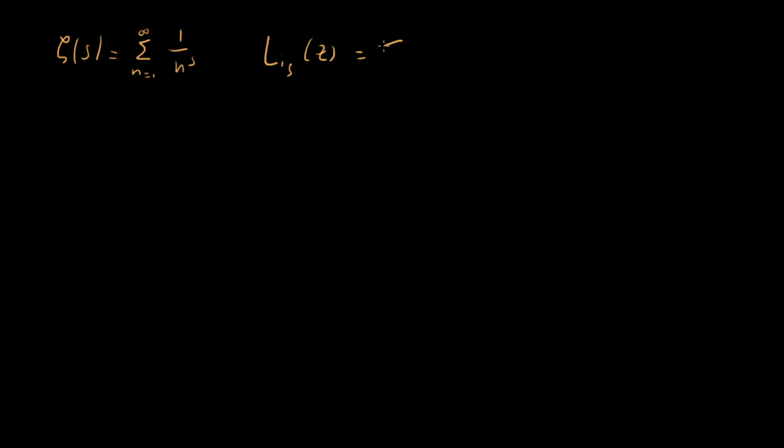It's a generalization because it's given by this sum, still n equals one to infinity. And we still have this n to the s down here. But in the numerator, we have z to the n. And so we see that for z equals one, we get back our Riemann zeta function.